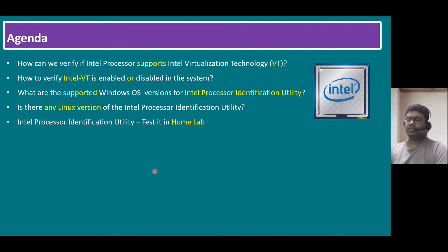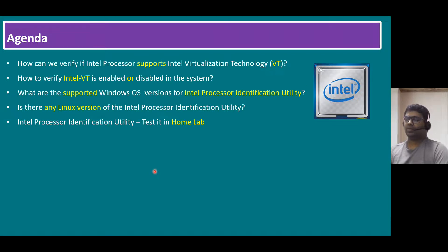Not only in lab systems or laptops, we can also test it on servers. Even before installing Microsoft Windows Hyper-V, Intel VT must be enabled on the server motherboard. At that time, we can also use this utility to verify whether VT is enabled or not. Another method is to go to the server or laptop BIOS, but this is a good alternate method using the free utility tool.